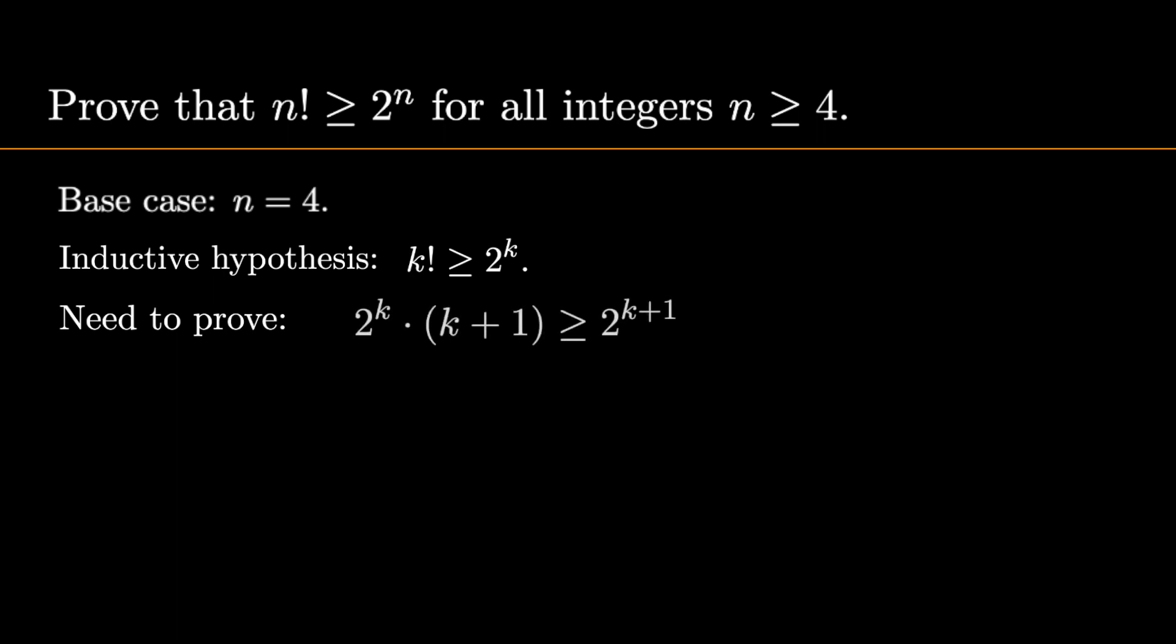To see if this is true, we observe that both sides have a common factor. So we can factor it out as follows. Now here, we can cancel the factor 2 to the k. Because it's a positive number, we won't run into trouble with division by 0. So this inequality is equivalent to the inequality k plus 1 is greater than or equal to 2.